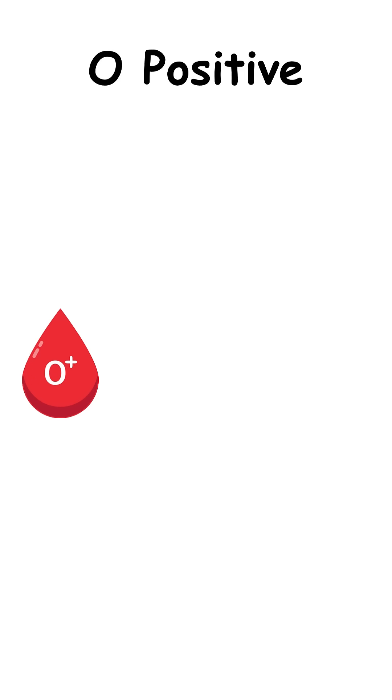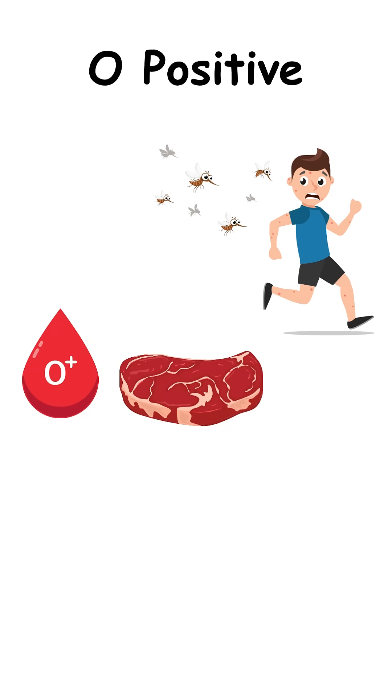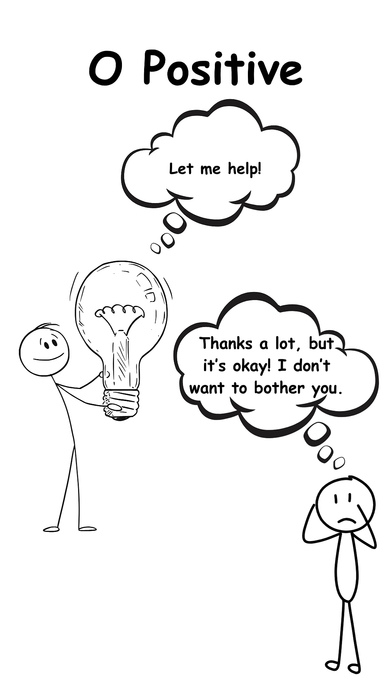If you're O+, you probably get bitten by mosquitoes a lot. Your body digests meat really well, and you're basically the human version of that friend who's always there to help others, but is weirdly picky about accepting help themselves.